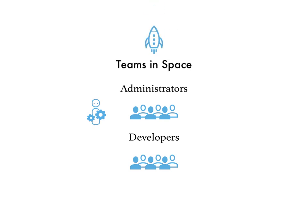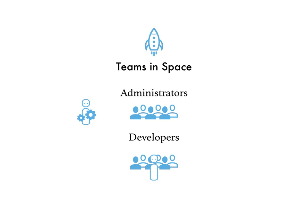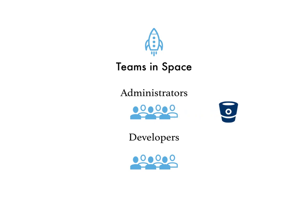Now you've got a team with two user groups and you can start inviting collaborators. You can invite administrators so they can manage the team and create repositories, and you can also invite people who you just want to have read-only access to the code. From your administrators group, you can create repositories which the team owns and manages.